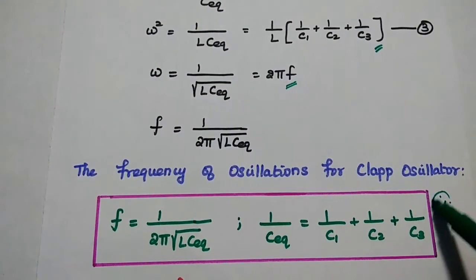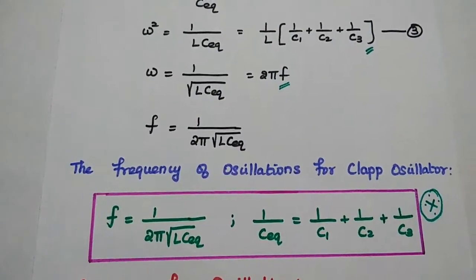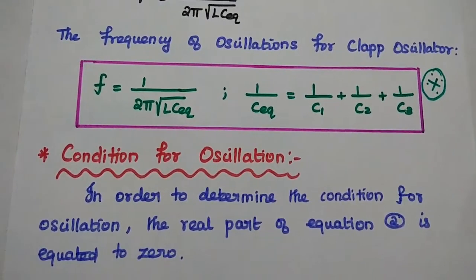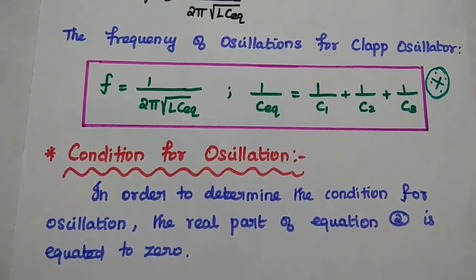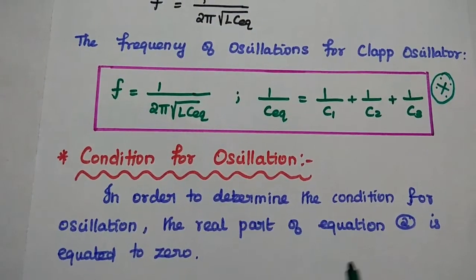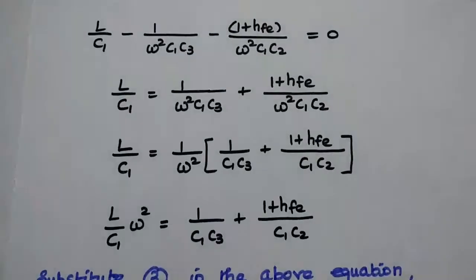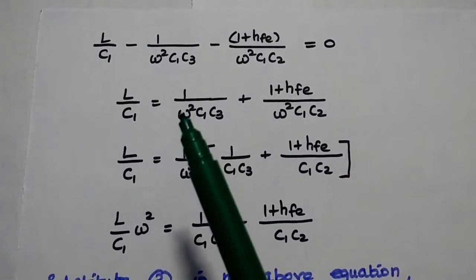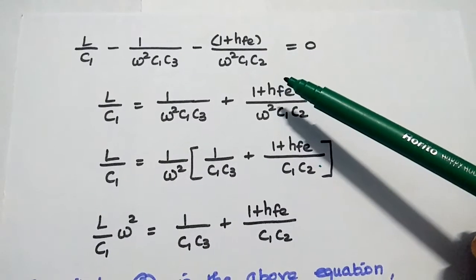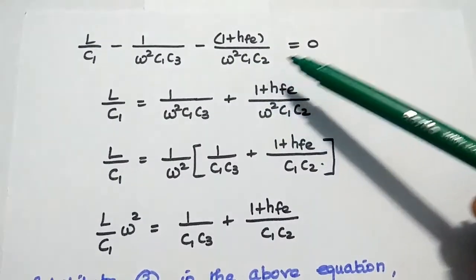This is a very important formula. We will solve some problems using this formula in the next video lecture. Next, we derive the condition for oscillation by equating the real part of the equation to zero: L/C1 − 1/(ω²C1C3) − (1 + HFE)/(ω²C1C2) = 0.